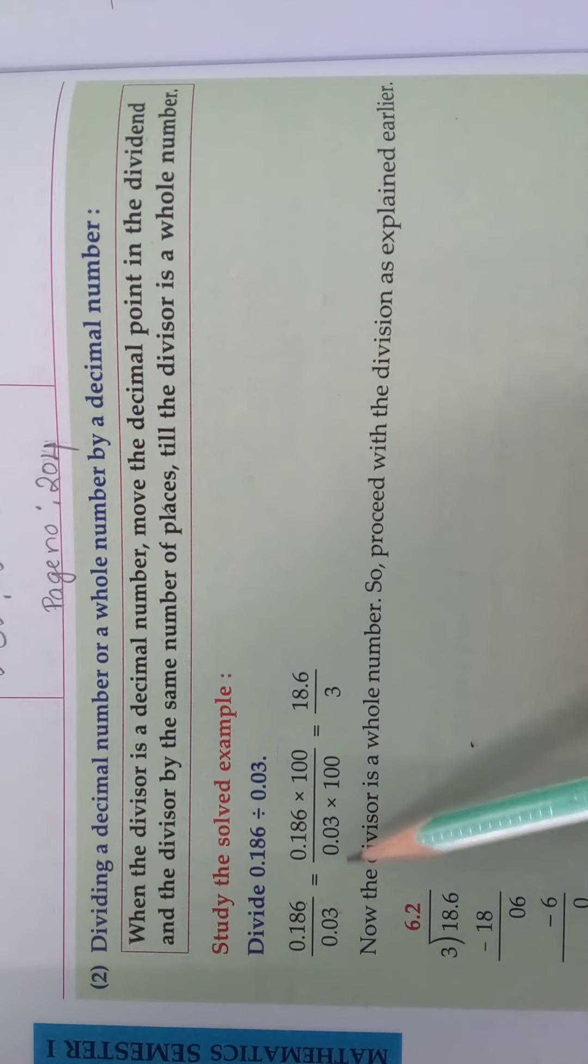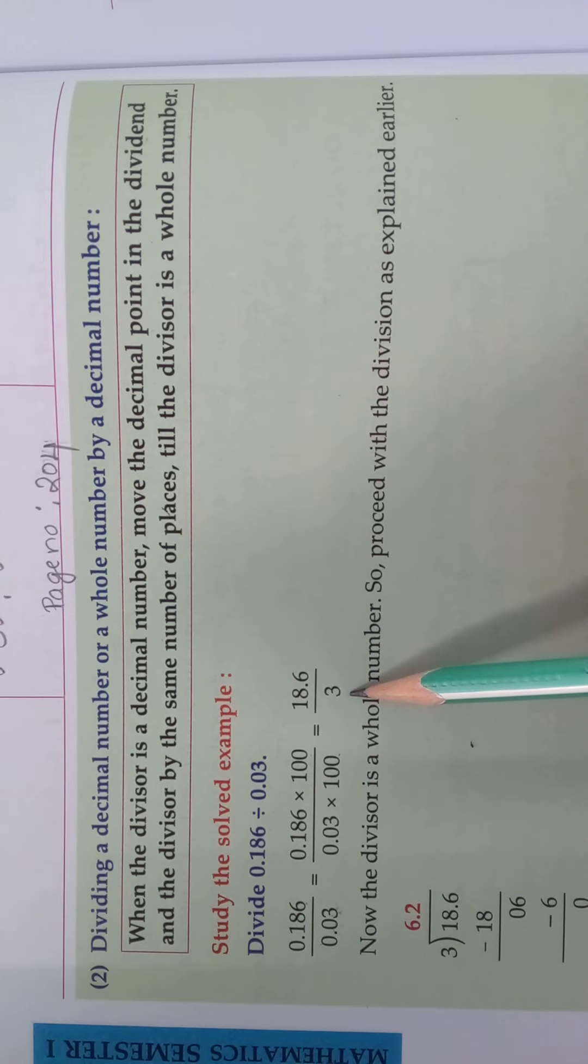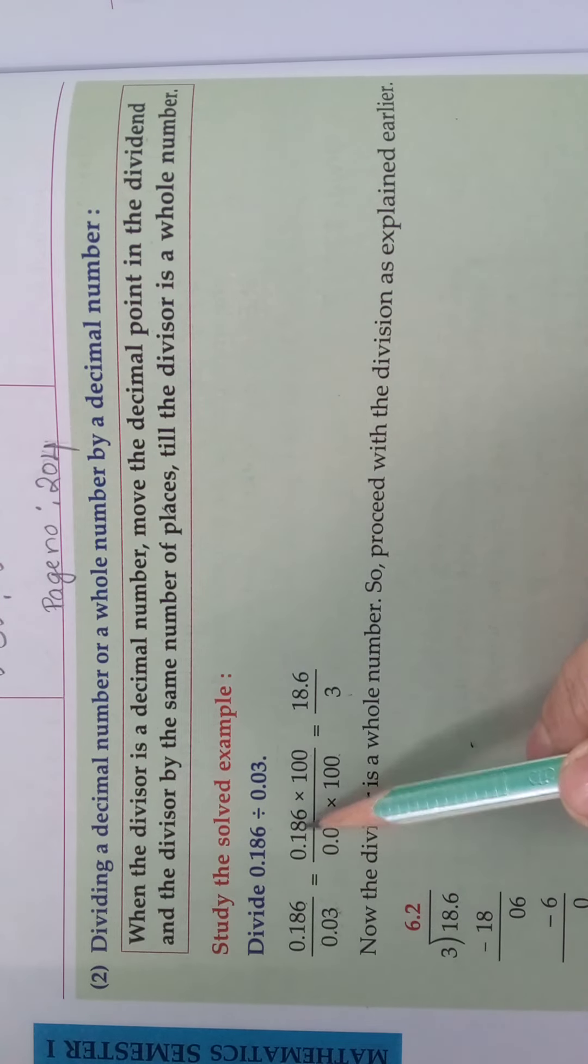You should multiply by 100. 0.03, since two zeros are there, two digits are there, you multiply it by 100. Then you will get the whole number. Both the numerator and denominator by 100.